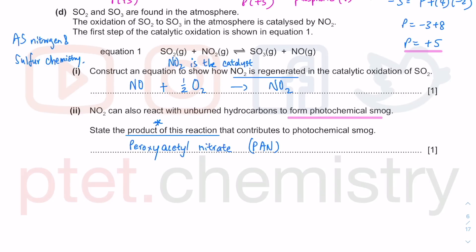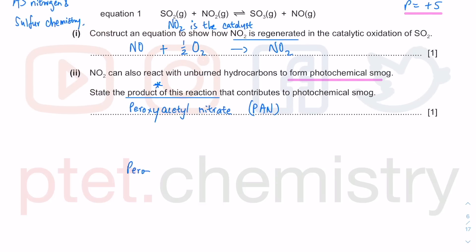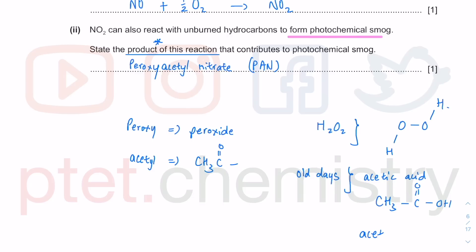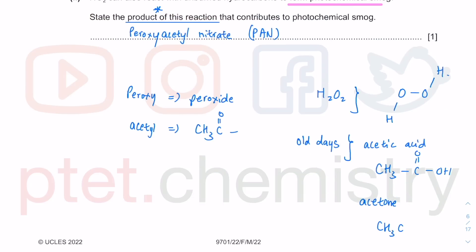Now this is the product of this reaction when they react together, and that is the dangerous component. How does it look like? The peroxy refers to peroxide, and we know hydrogen peroxide. If you think about H2O2 hydrogen peroxide, the oxygen-oxygen form a single bond like that. What about acetyl? The acetyl is basically the CH3CO. In the old days, I mean like 50, 60, 70 years ago, they still call this acetic acid.